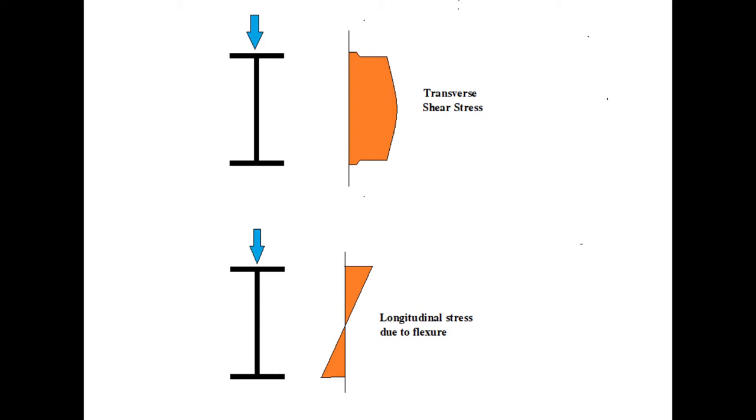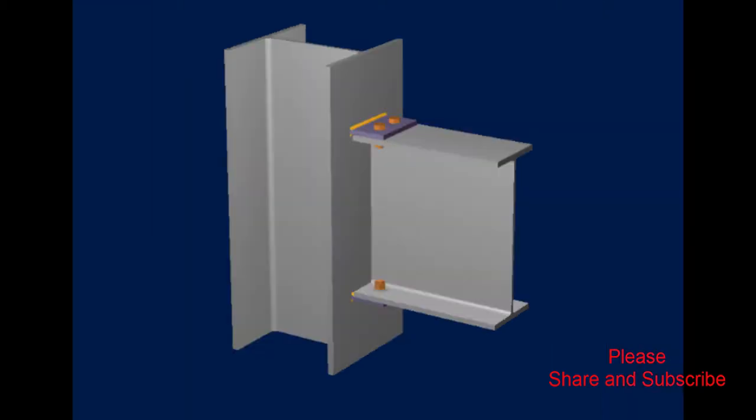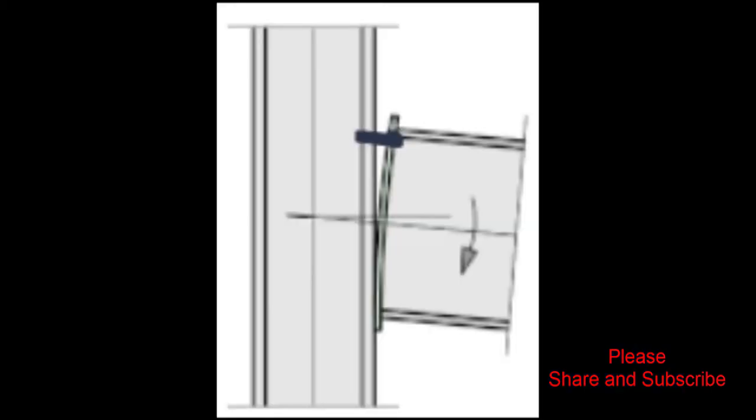As explained in the earlier video on partial moment release, no connection is ideally a pure shear connection and no connection is ideally a pure moment connection. A certain portion of moment will develop in a shear connection because the connection is placed away from the neutral axis, restricting some rotation. Similarly, in a moment connection, slight rotation may occur due to inelastic deformation of the connection at the flange level.